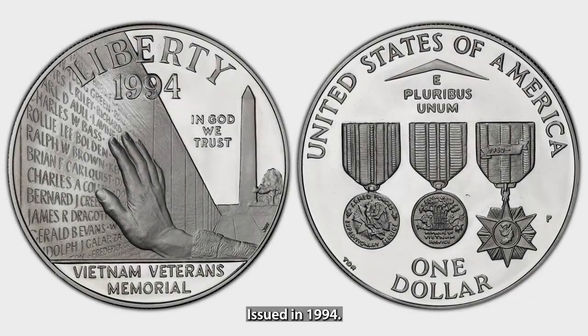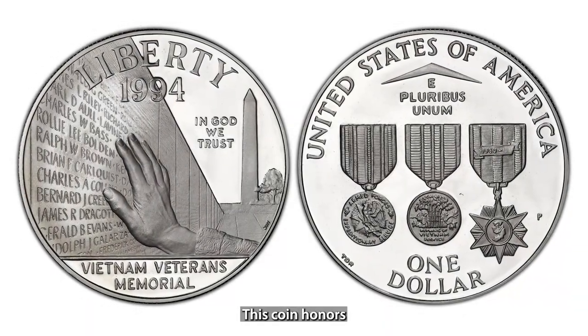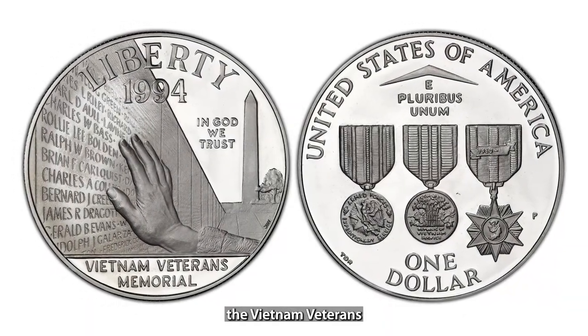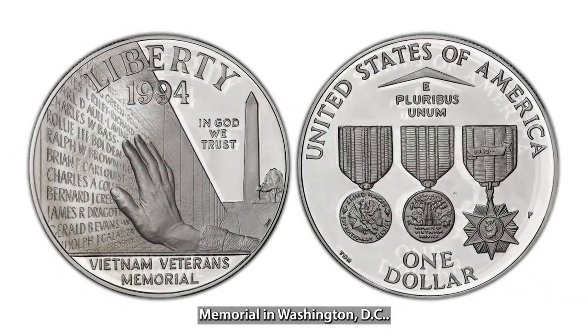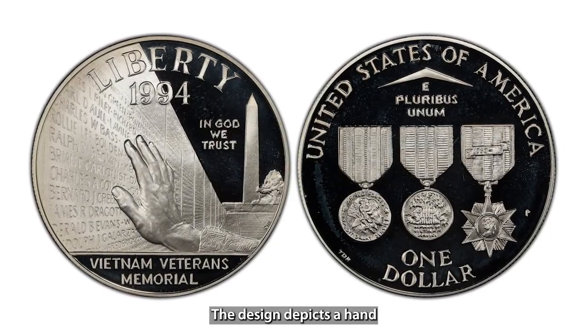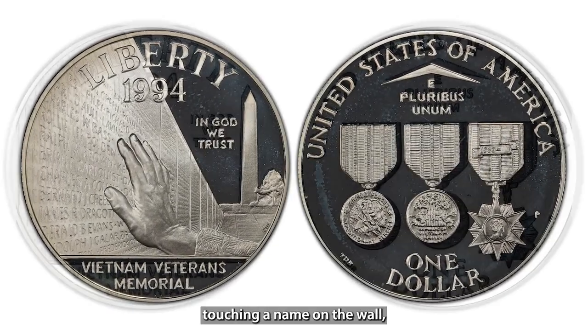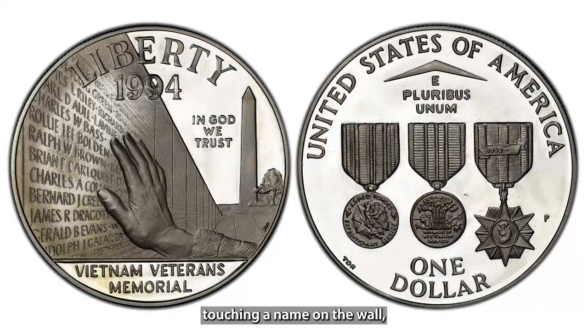Issued in 1994, this coin honors the Vietnam Veterans Memorial in Washington, D.C. The design depicts a hand touching a name on the wall, representing the deep emotional connection to the fallen.